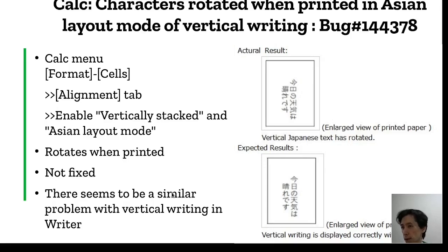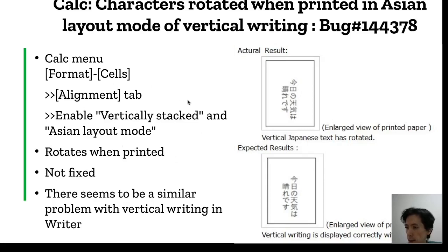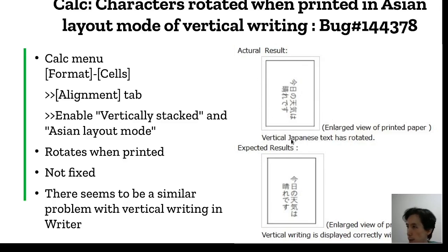In Calc, vertical writing mode has a problem: in vertical and Asian layout mode, some characters are rotated incorrectly. PDF export is not rotated, but printing is rotated. There seems to be a similar problem with vertical writing in Writer.